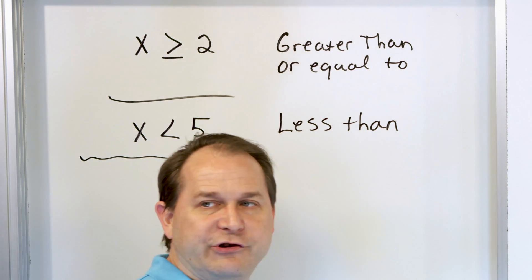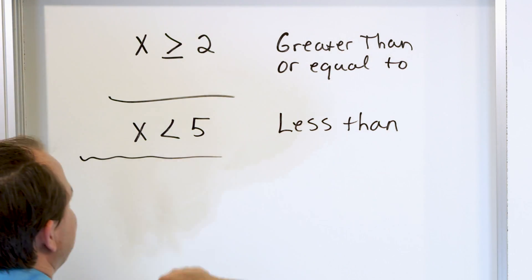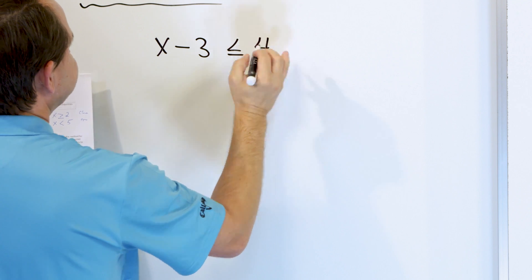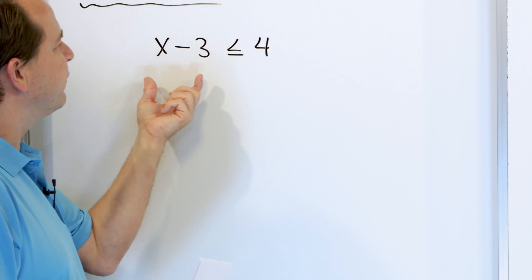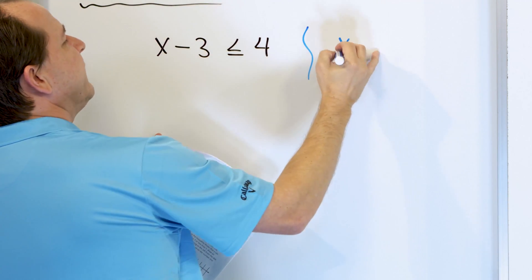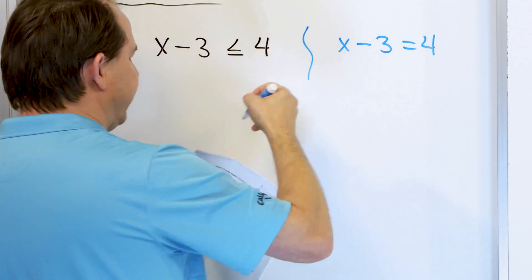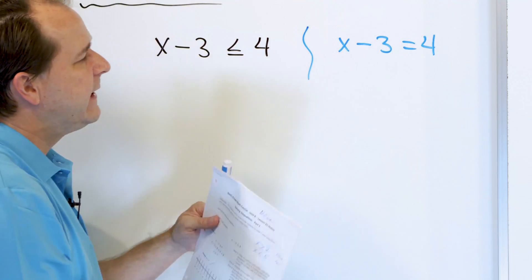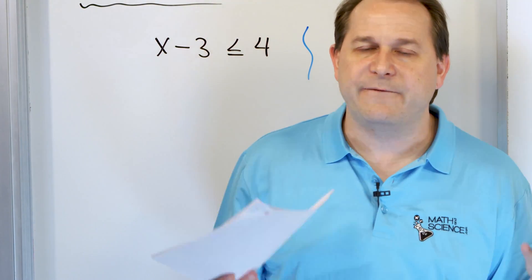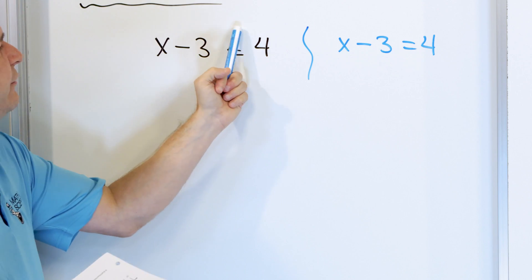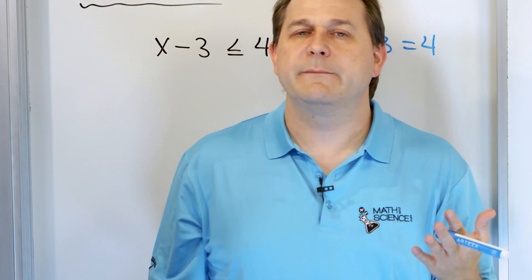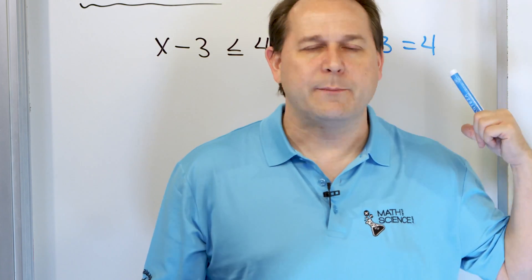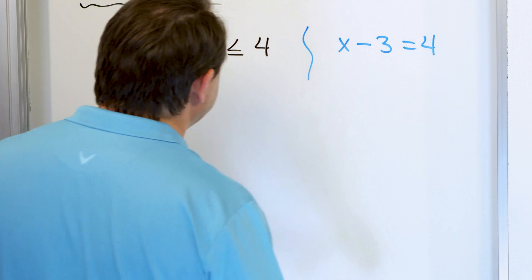So now let's solve our first inequality. Here we're going to solve x minus three is less than or equal to four. Notice this looks very similar to an equation — the equation version would be x minus three equals four. We already know how to solve that by adding three to both sides. For inequalities, we're going to do the same thing — just pretend it's an equal sign and apply the same rules. The rules are basically the same, with one exception I'll show you in a second.